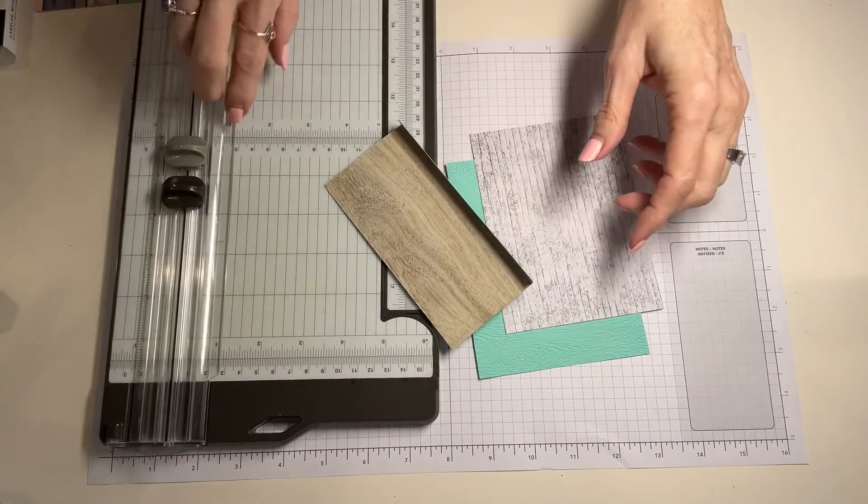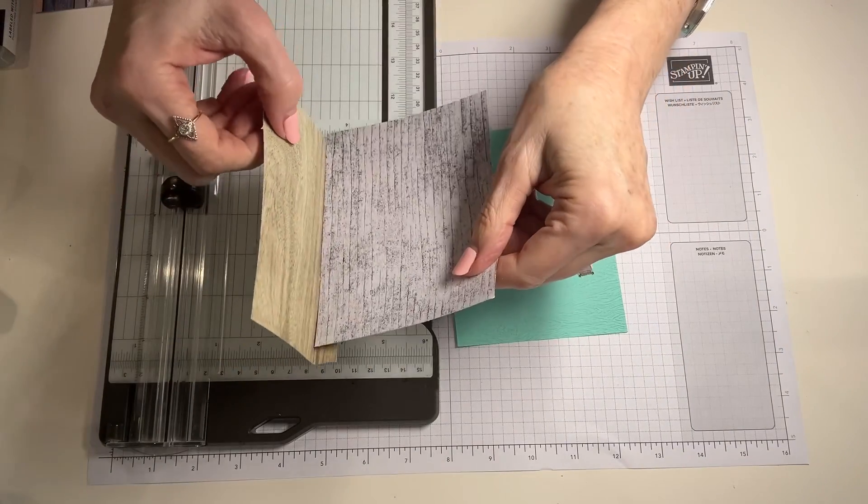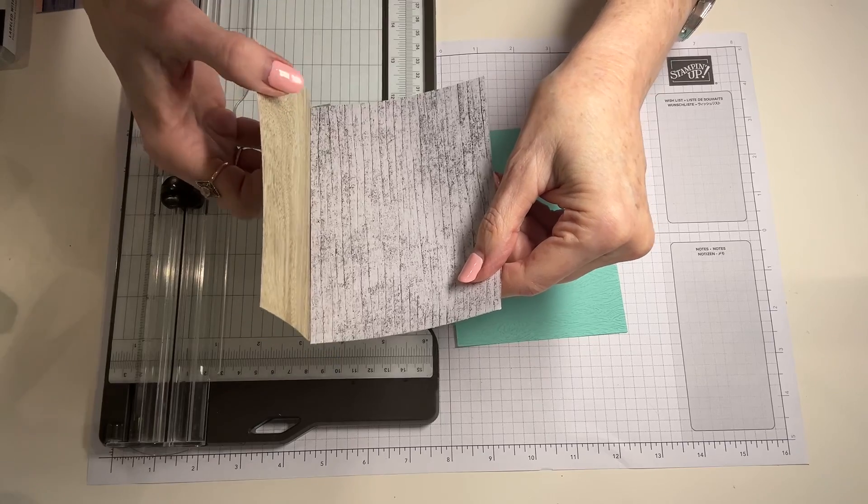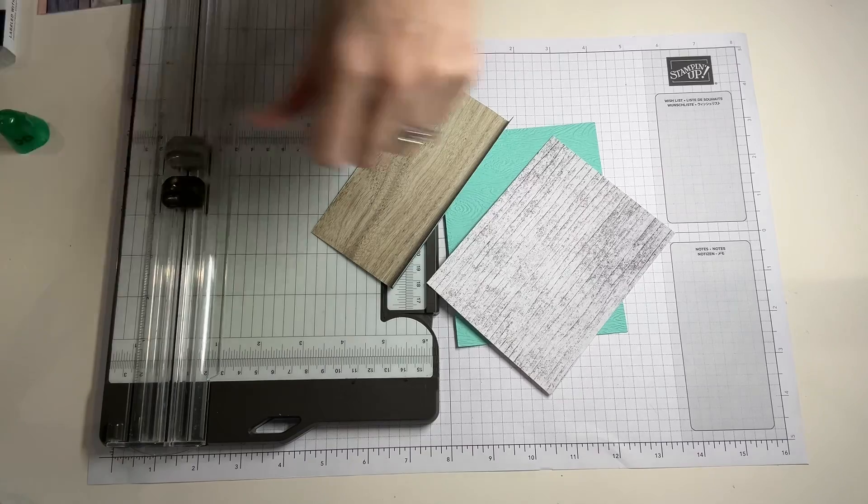Now your next step, what we're going to do is we're going to adhere the flap, this part, to the bottom of this designer series paper. So it's going to open and fold like this. So let's go ahead and do that right now.